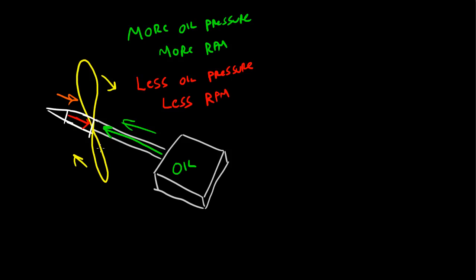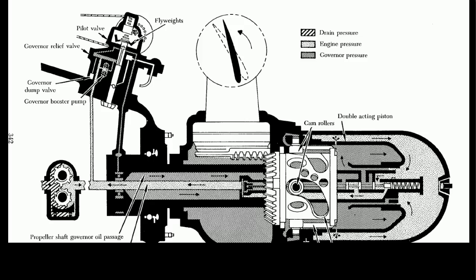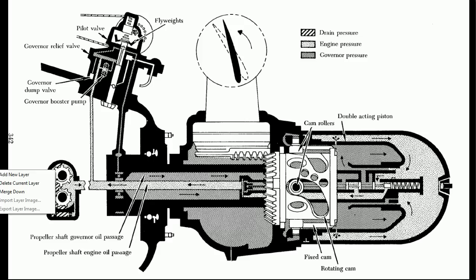Alright, now, why does this happen? Or, internally, how does this happen inside the prop hub? Well, rather than attempt to draw it, what we're going to do is we're going to go to the FAA's diagram, which is far, far better than anything I could draw myself. You can find this diagram. It's part of Advisory Circular 65-12A. And this happens to be page 346. So, if you're interested, look up Advisory Circular 65-12A, go to page 346, and you'll see this same diagram, and you'll see a lot of much better explanations about it.